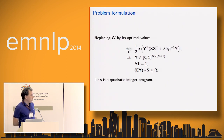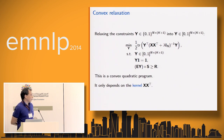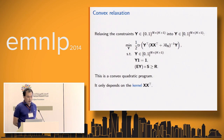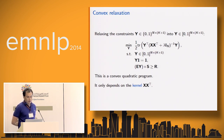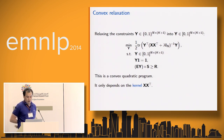Replacing W by its optimal value, we obtain a problem that depends only on matrix Y. This is a quadratic integer program due to the constraint that Y should be 0 or 1, and in general very hard to solve. We propose to relax the constraint Y ∈ {0,1} to Y ∈ [0,1], obtaining a convex quadratic program that is easier to optimize and for which we can find the optimal solution. The formulation depends only on the kernel matrix XX^T, so we could consider other kernels proposed for relation extraction.